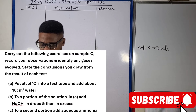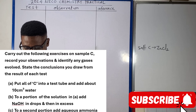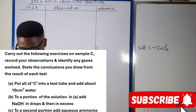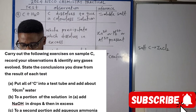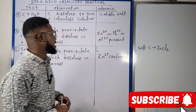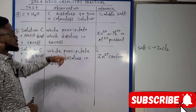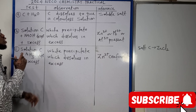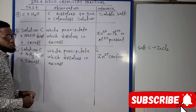As you can see on your screen, we are going to carry out the following exercises on sample C: record your observation, identify any gases involved, and state the conclusions you draw from each test. We are told to put all of C in the test tube and add about 10 cm³ of water. When we add water to sample C, it is going to dissolve to give a colorless solution, and we infer that it is a soluble salt.